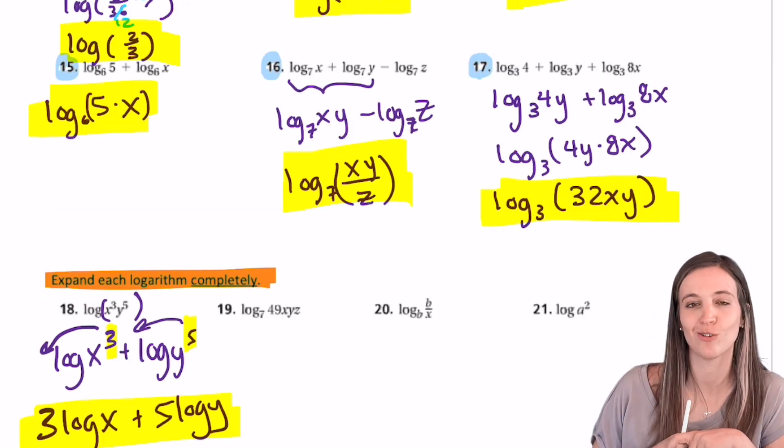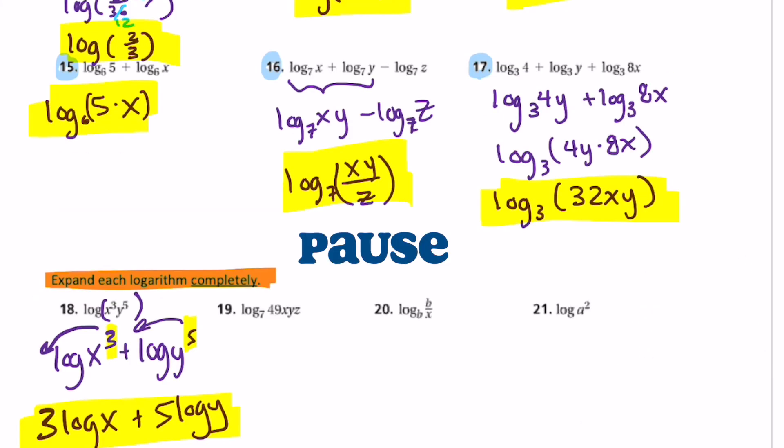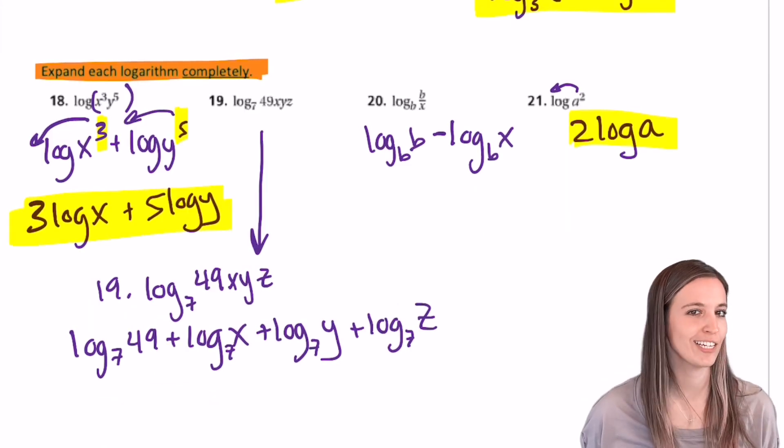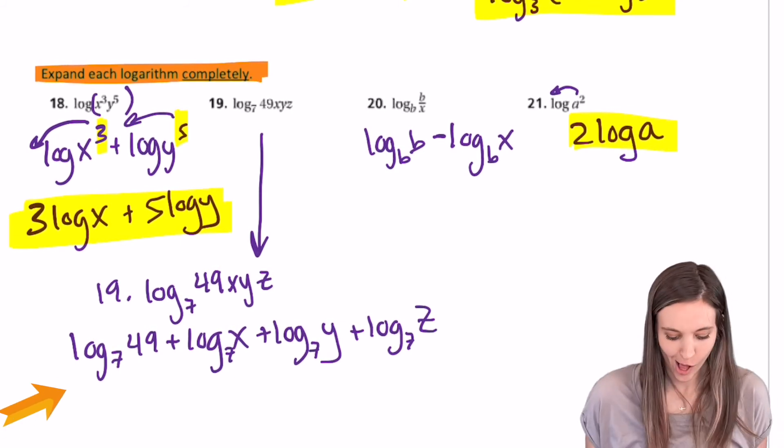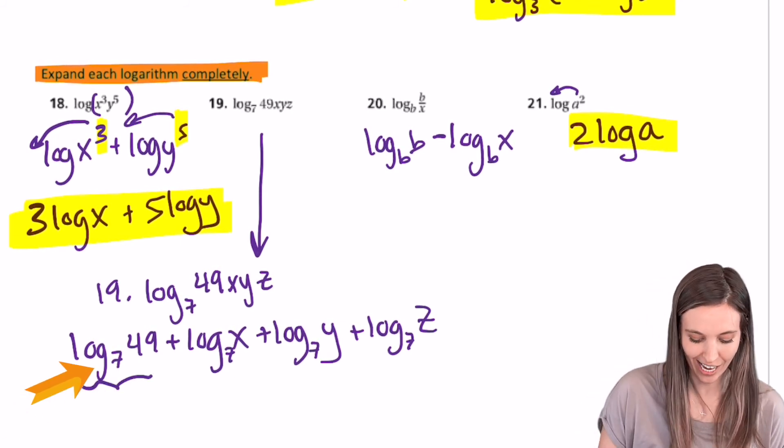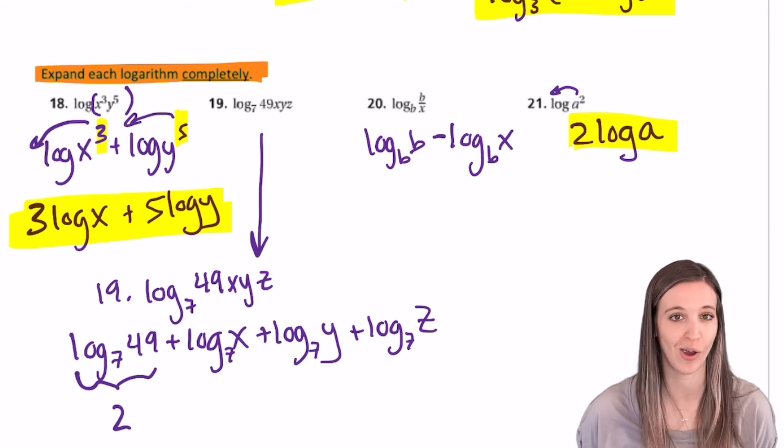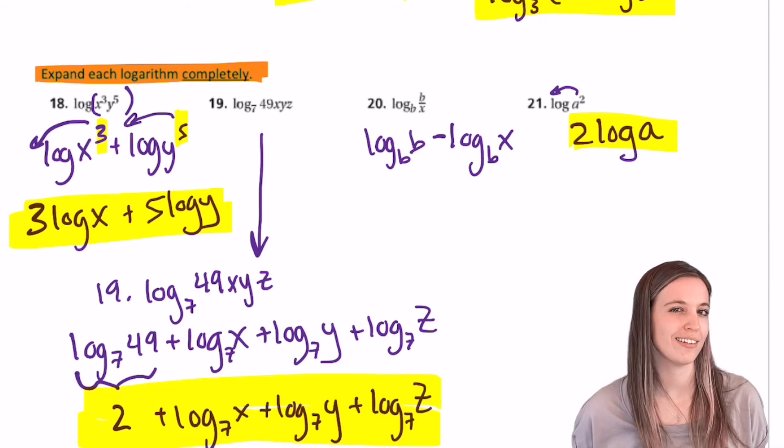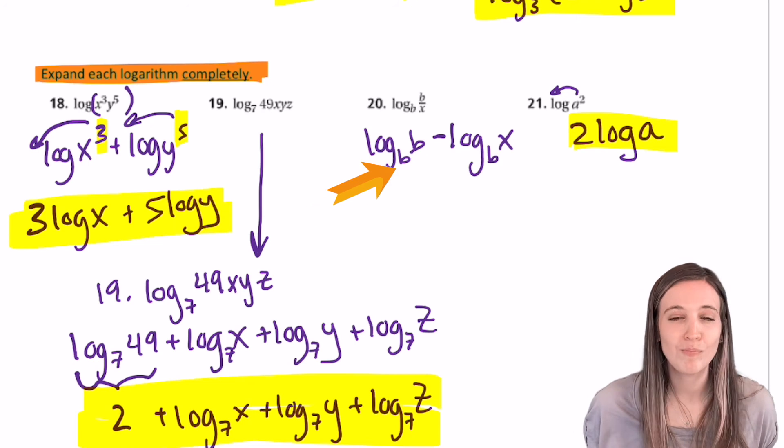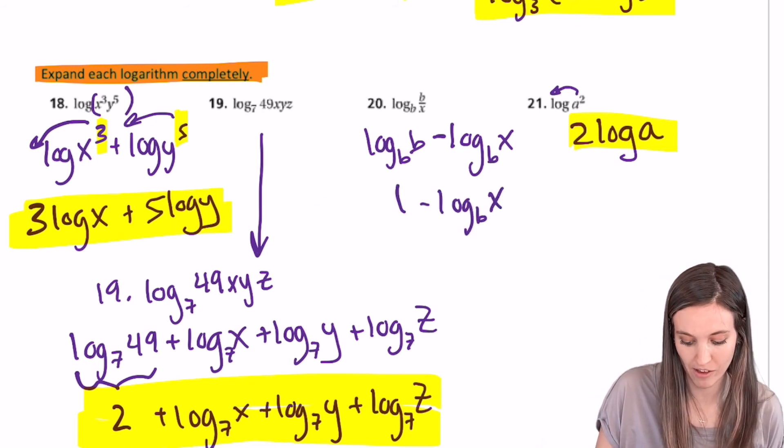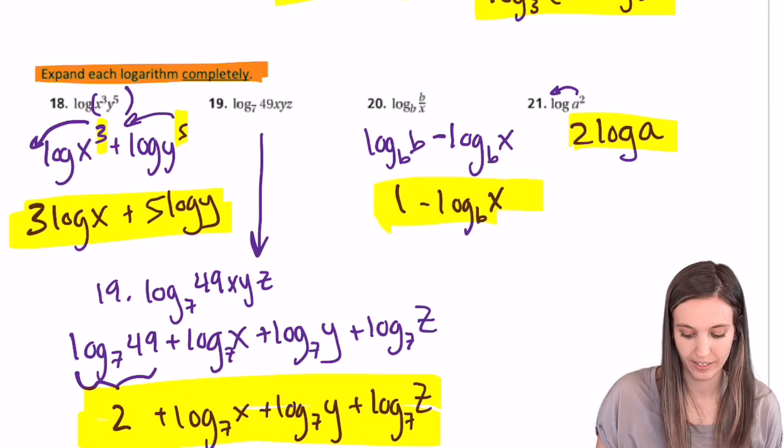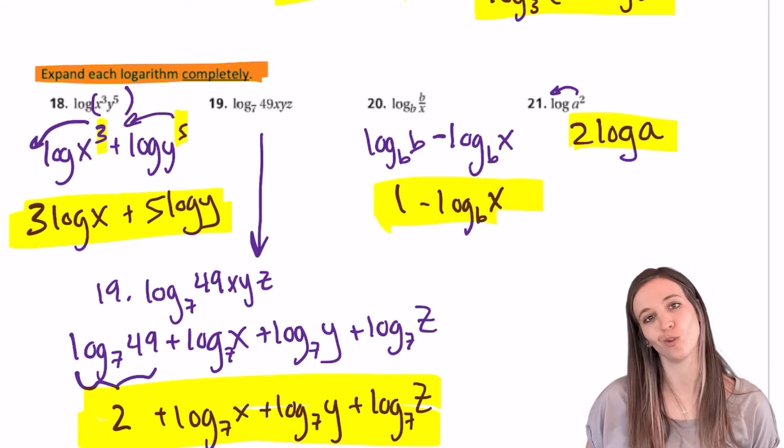Why don't you expand those next three? Okay, check 19 through 21. Do you see what else you can simplify in 19? Log base 7 of 49. I know that that's 2 because 7 squared is 49. Do you see that sneaky one in 20? Log base b of b is 1. So 1 minus log base b of x is what I should get. Then finally, 21, we get 2 log a.